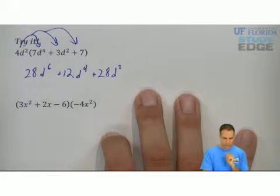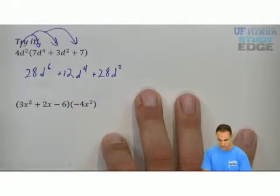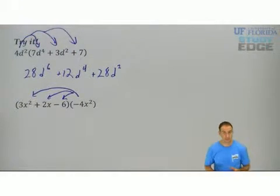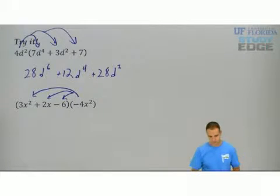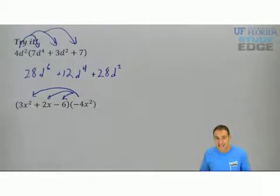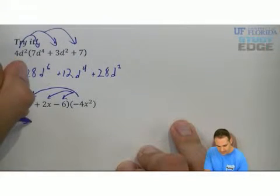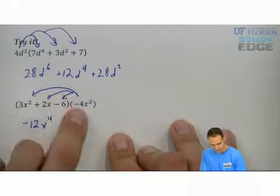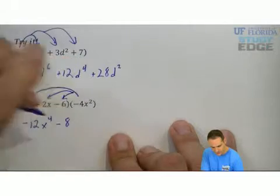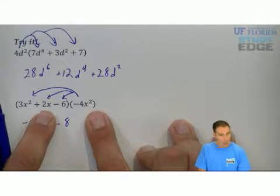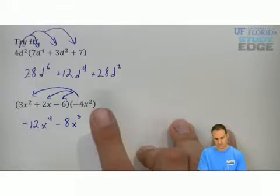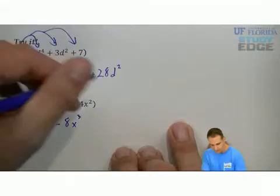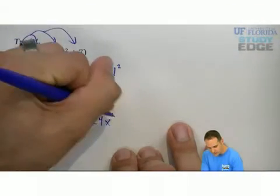For this next one, I put the monomial at the very end, so I would multiply negative 4x squared to each term in the parentheses. Multiply the coefficients, add the exponents. Negative 4 times 3 is negative 12, and 2 plus 2 gives you x to the fourth. Negative 4 times positive 2 is negative 8, and 2 plus 1 gives you x to the third. Negative times negative is positive: negative 6 times negative 4 is positive 24, and that will be just x squared.